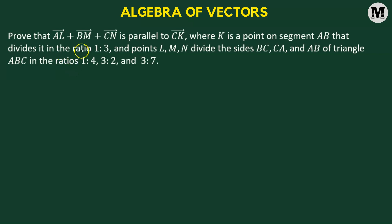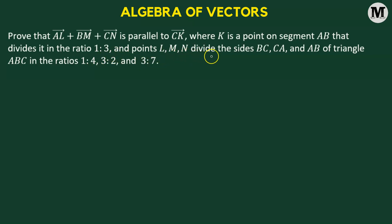Prove that the sum of the vectors AL, BM, and CN is parallel to another vector CK, where K is a point on the segment AB that divides it in the ratio 1 to 3. We have three other points L, M, and N. These three points divide the sides BC, CA, and AB of the triangle ABC in the following ratios.